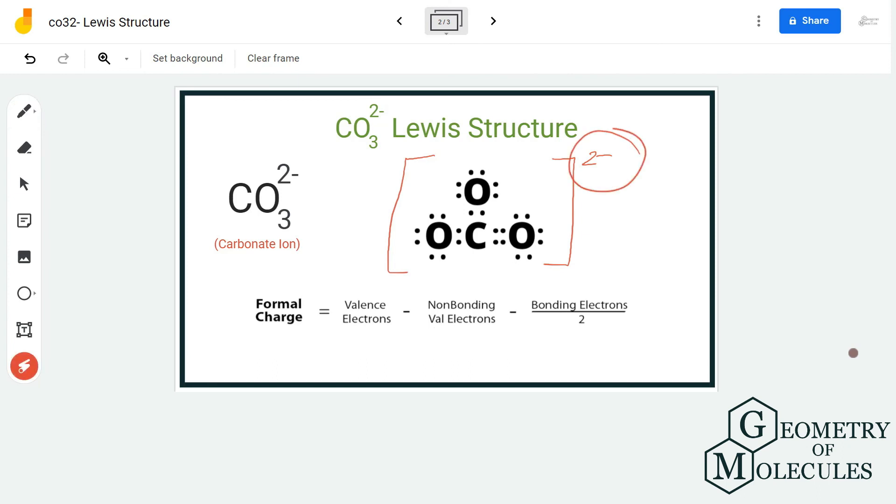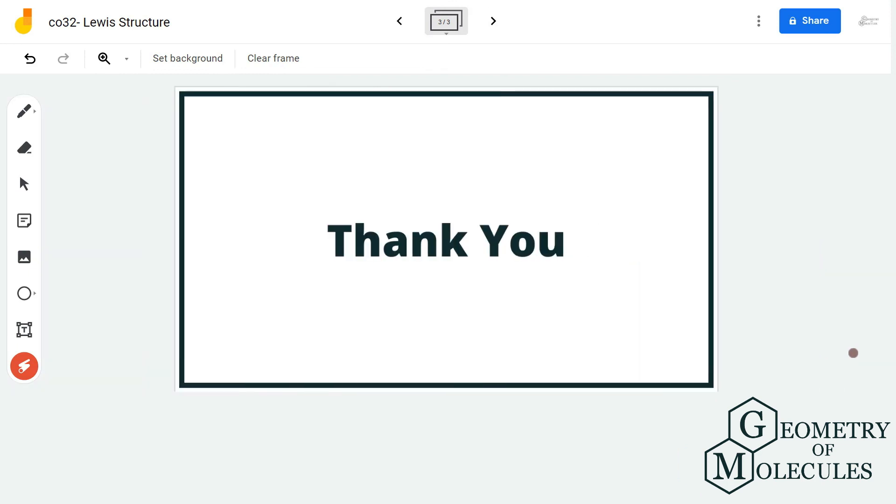So we are going to add brackets and write charges. So this is the Lewis structure for CO3 2-. And for more videos on Lewis structure, molecular geometry, polarity, hybridization of the molecules, make sure to subscribe to our channel. And thank you for watching.